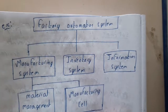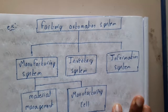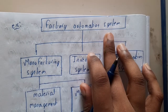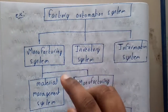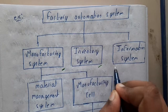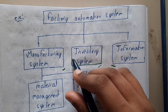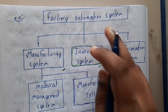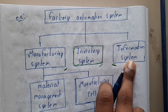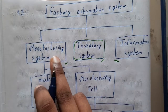Let's take a neat and clear example — a factory automation system. Here we have a manufacturing system, an inventory system, and an information system. The inventory system is where you store files or automated devices, and the information system stores information about those things.